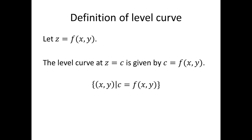Given a function on two variables, z equals f, we obtain the level curve at c by setting z equals c. For example, the level curve at z equals 0 is given by 0 equals f.